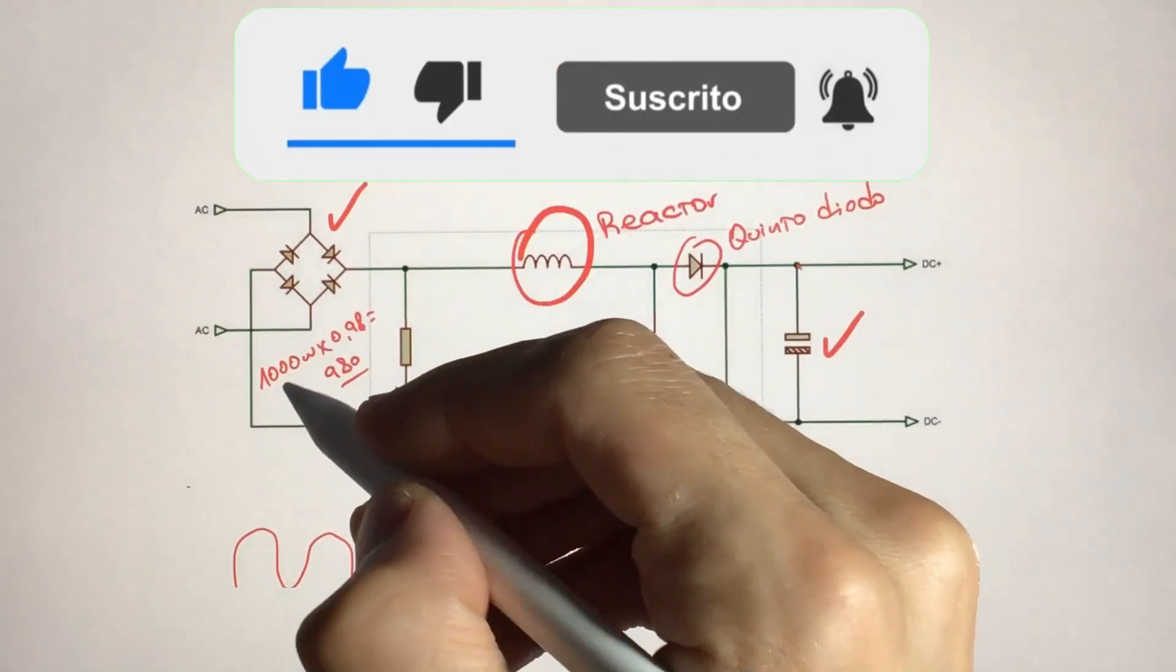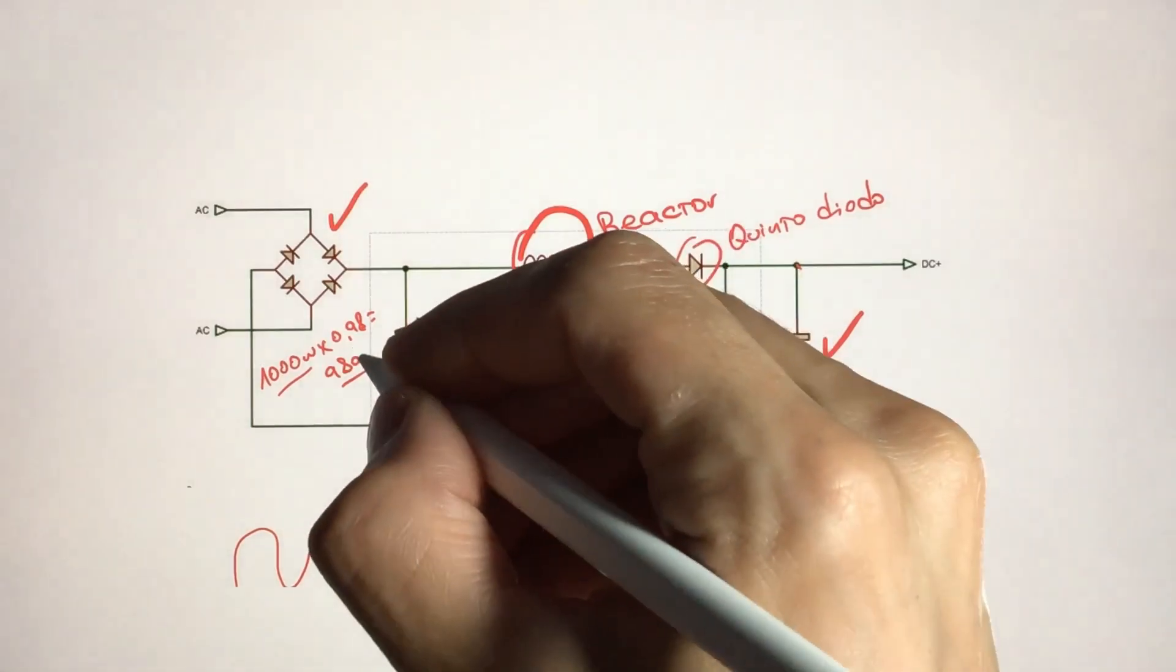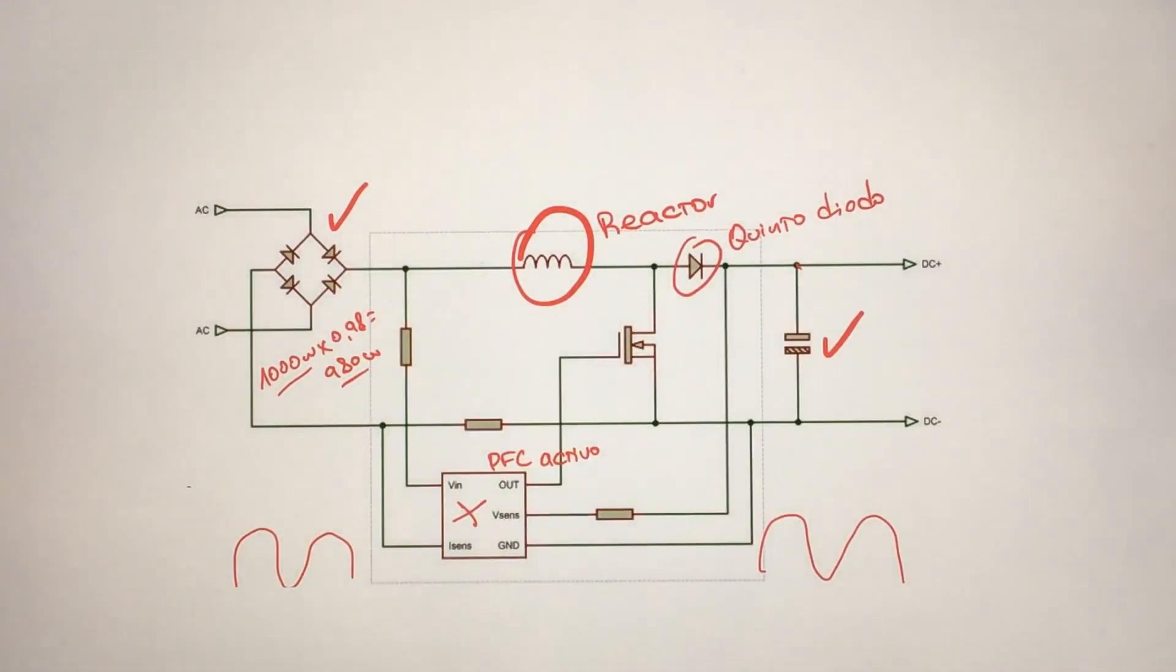So if they deliver 1000 watts to me, if I were using 1000 watts, I would take advantage of 980 thanks to active PFC. How does it do it?